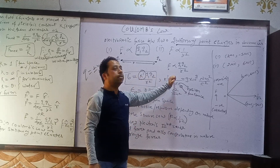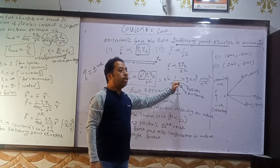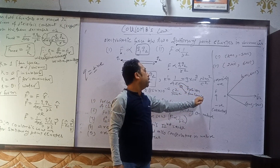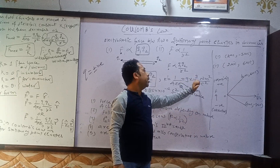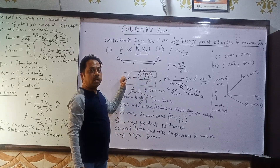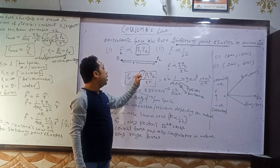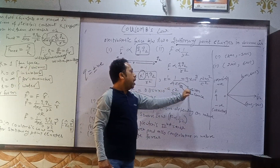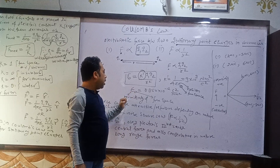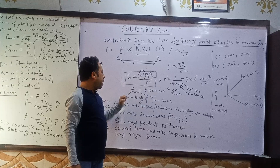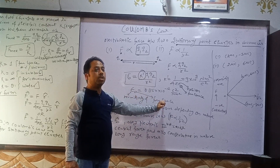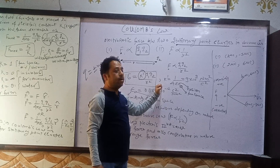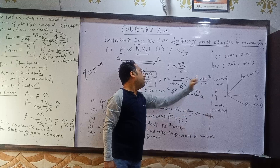This proportionality constant is given as 1 over 4π epsilon naught. It is not E, it is epsilon - epsilon naught. Epsilon naught is a constant and the zero signifies free space. Its value comes out to be 9 × 10⁹. The unit you can find: force is Newton, charge is Coulomb, distance is meter square, so K has units of Newton·meter square per Coulomb square. Epsilon naught is defined as the permittivity of free space. Its value is 8.854 × 10⁻¹² Coulomb square per Newton·meter square. These are constants so they will be given; you need not memorize them.